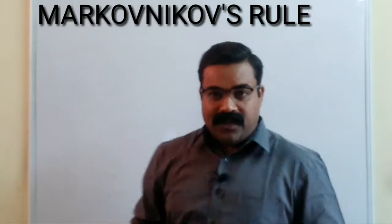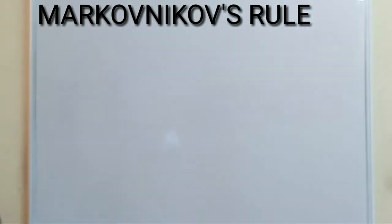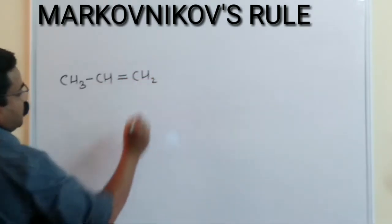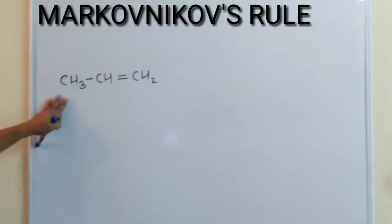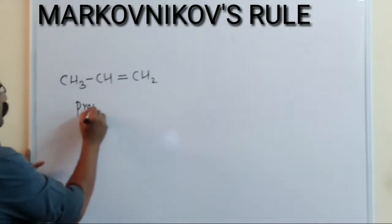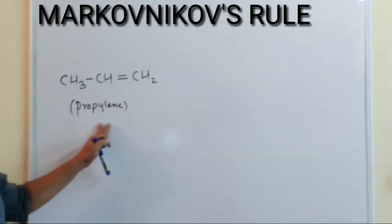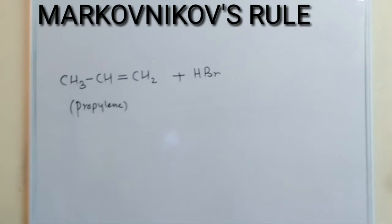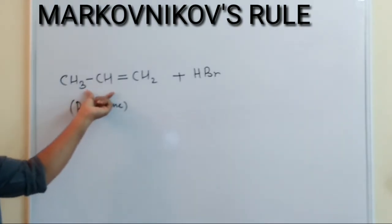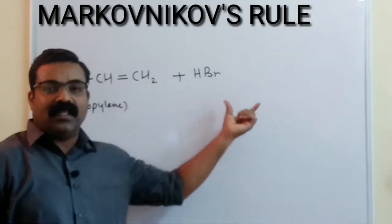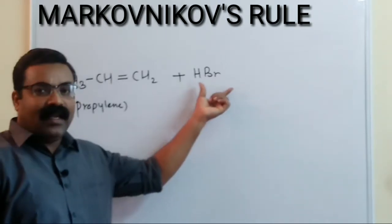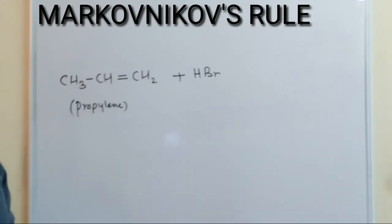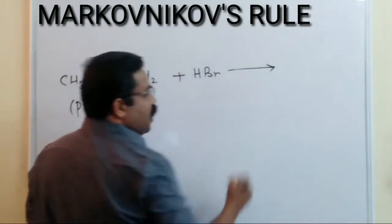Let us learn Markovnikov rule first. I am writing a reaction here: CH3-CH=CH2, which is propylene. So let us take propylene reacting with hydrogen bromide (HBr). In general, an unsymmetrical alkene reacts with a hydrogen halide — here I have taken HBr as the hydrogen halide reacting with propylene as the unsymmetrical alkene.